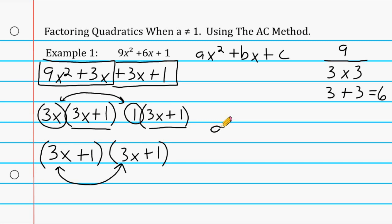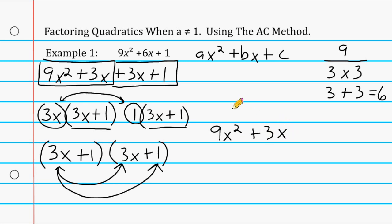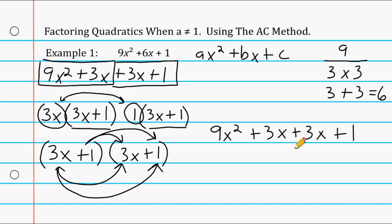To verify, we multiply (3x + 1)(3x + 1) using FOIL: 3x times 3x is 9x squared, 3x times 1 is 3x, 1 times 3x is 3x, and 1 times 1 is 1. Combining the middle terms gives 9x squared plus 6x plus 1, which is the quadratic we started with.